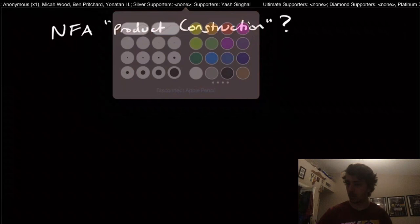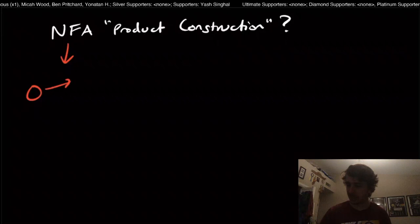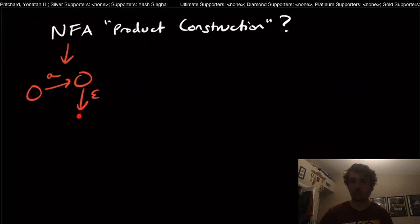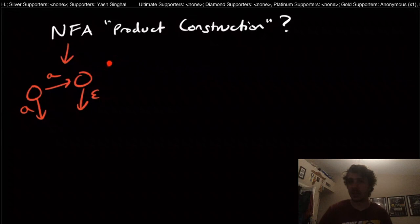So is there a product construction for NFAs? Recall from before that an NFA is just a state-based machine. We have states and transitions between them. With an NFA, we can have any number of transitions of any type. From any state, we can have an A on this transition, or an epsilon transition where we don't read anything. We can have multiple transitions on the same character coming out of the same state, and we can leave out transitions entirely.